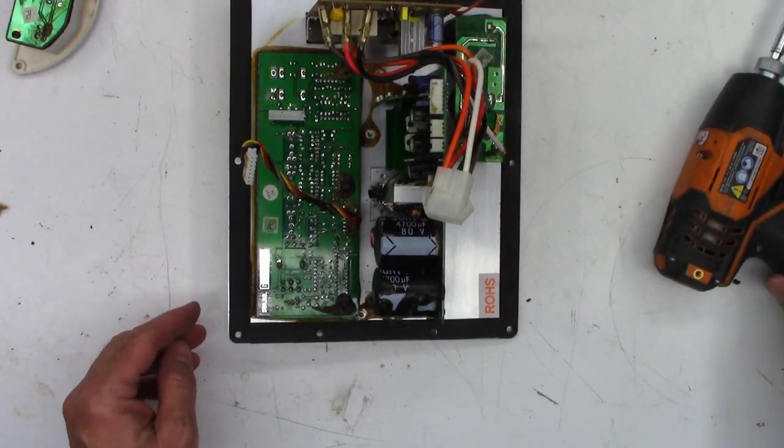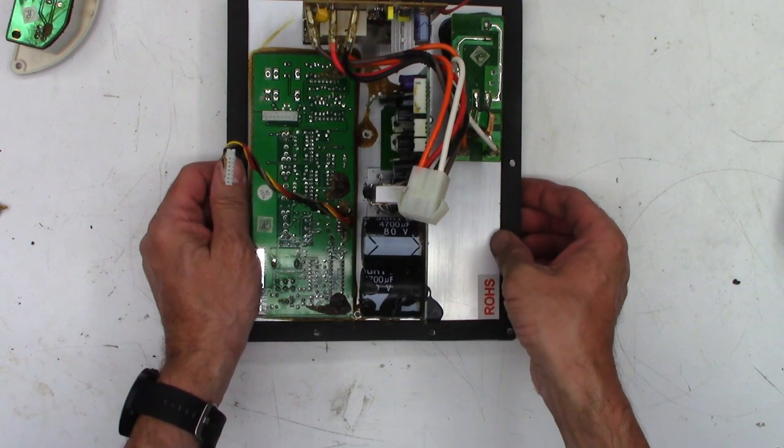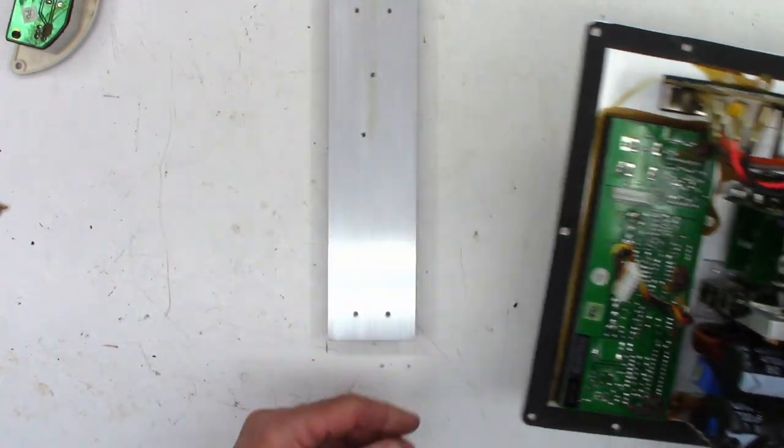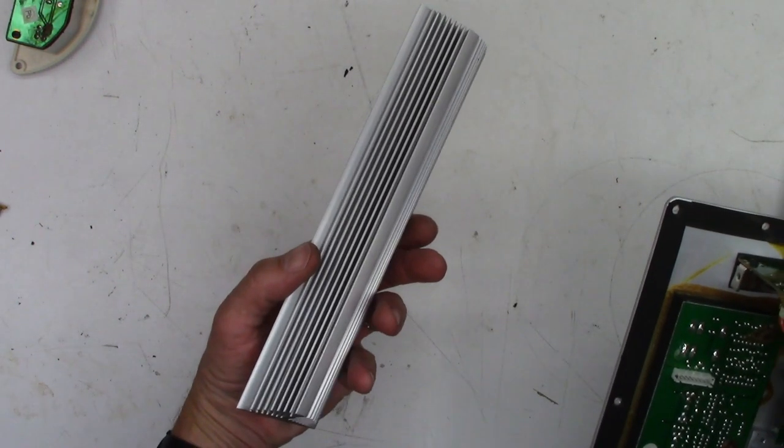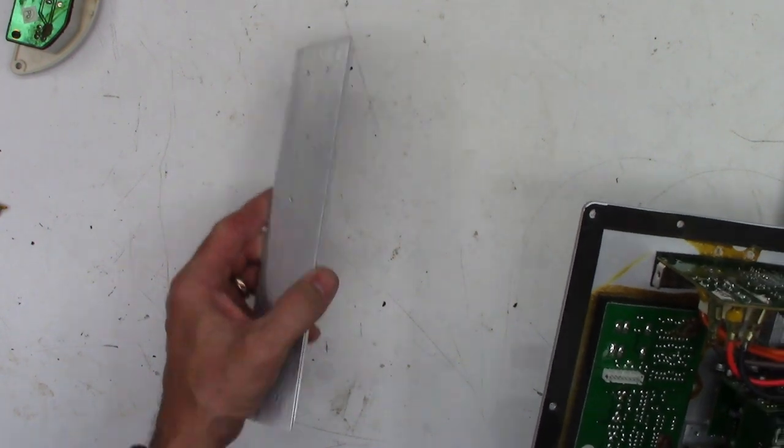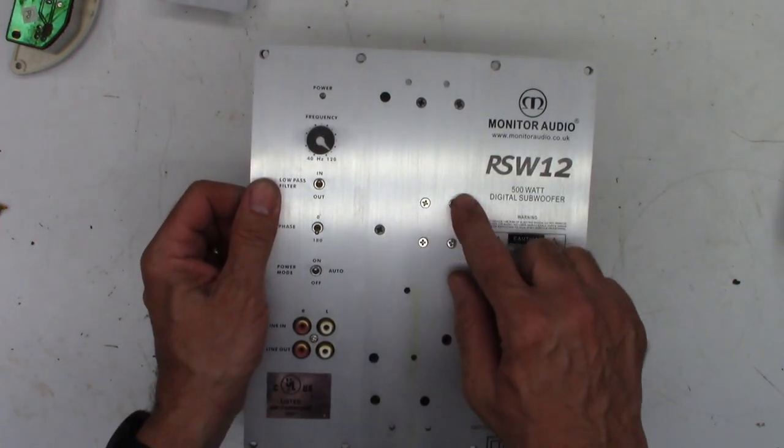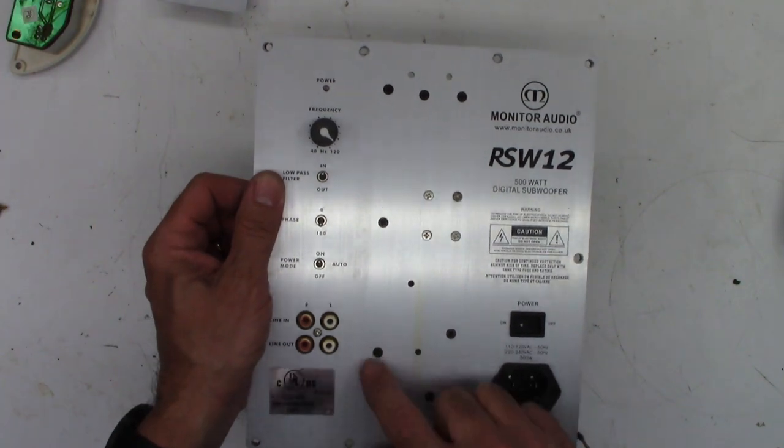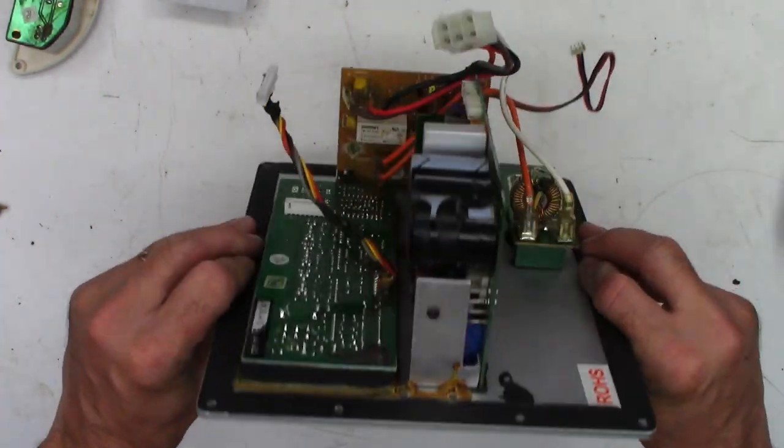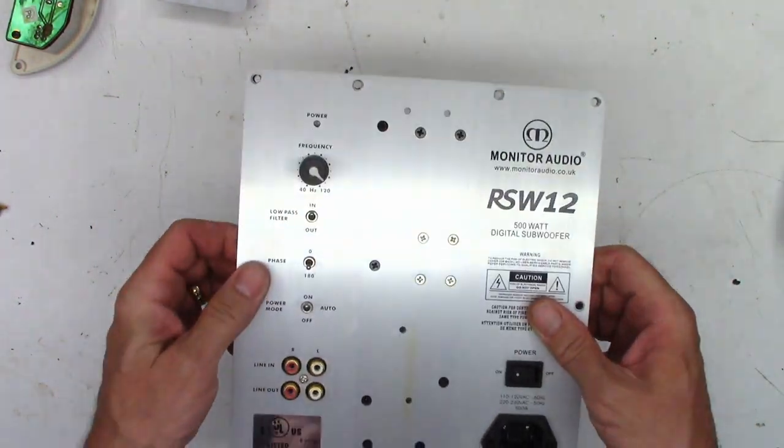Well, with any luck now, as I go ahead and lift this off, it will leave something behind. And it did. It left the little heat sink behind. Now look at that. There are the four screws I need to get to, plus a plethora of other screws around here that we're going to have to get out.